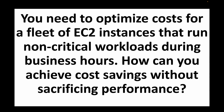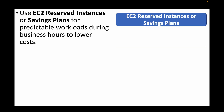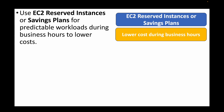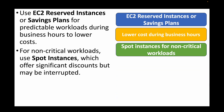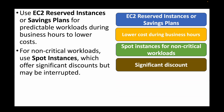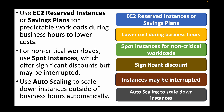The next question is: you need to optimize costs for a fleet of EC2 instances running non-critical workloads during business hours — how can you achieve cost savings without sacrificing performance? We can use EC2 Reserved Instances or Savings Plans for predictable workloads during business hours at a lower cost. For non-critical workloads, Spot Instances offer significant discounts, though instances may get interrupted. We can also use Auto Scaling to automatically scale down instances outside of business hours.